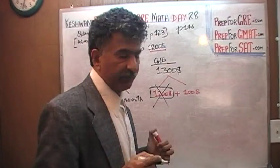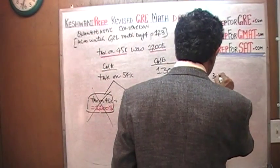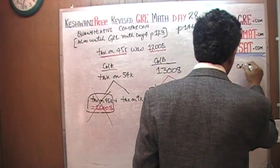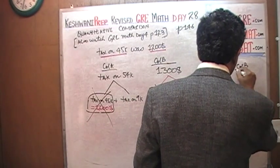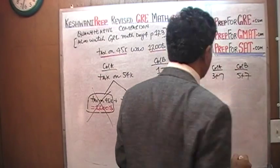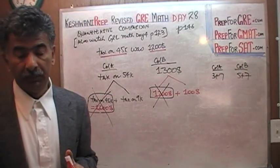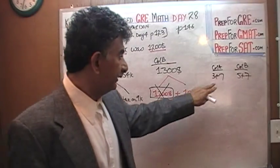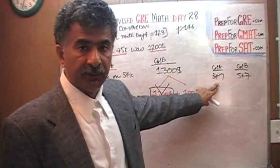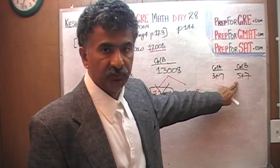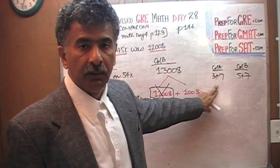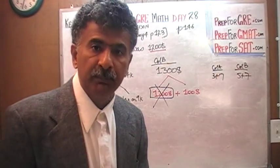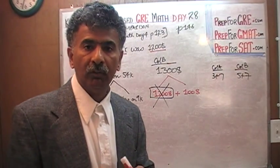For example, if somebody asks you which one is bigger — column A: 3 plus 7, versus column B: 5 plus 7 — which one is bigger? You could sit there and add 3 plus 7 is 10, and 5 plus 7 is 12, therefore 12 is more than 10. But if you were to do that, you have missed the entire point of these questions.